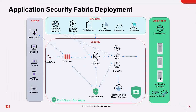Before we get in-depth into the different segments of the Application Security Fabric, let's discuss the segments we'll be covering in this video. The access segments are mostly for your clients accessing the application. FortiClient is a fabric agent that delivers protection, compliance, and secure access as a single modular lightweight client. It runs on your laptop, desktop, or mobile devices, and connects to both Universal FortiNET Zero Trust and a VPN encrypted tunnel, as well as URL filtering or a CASB cloud access security broker.